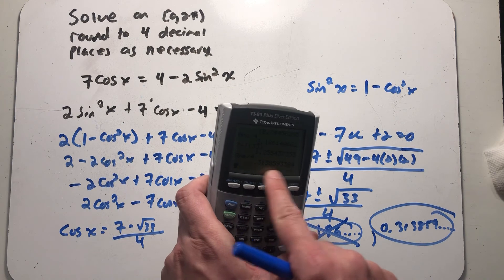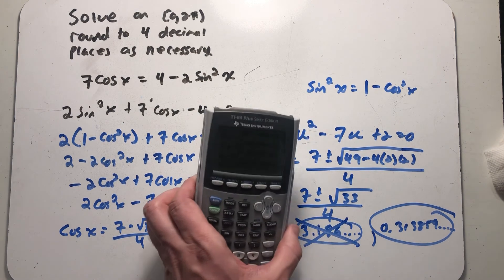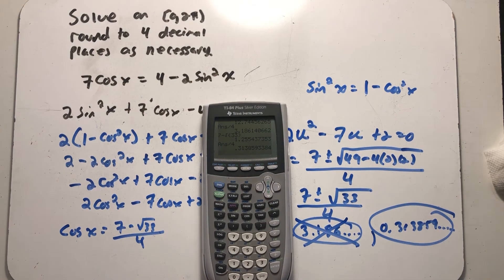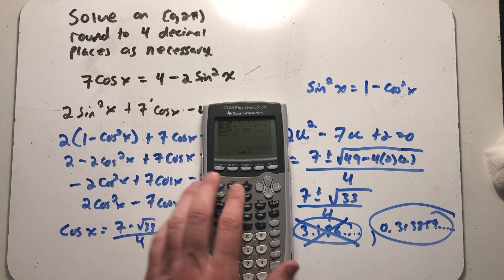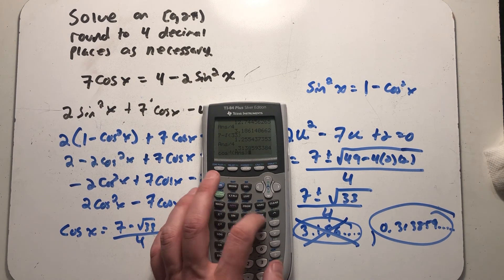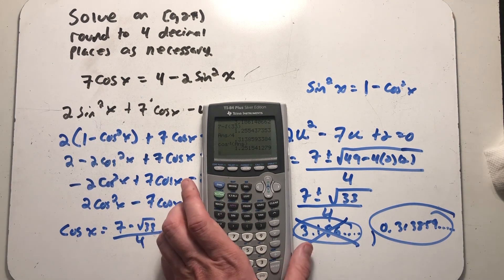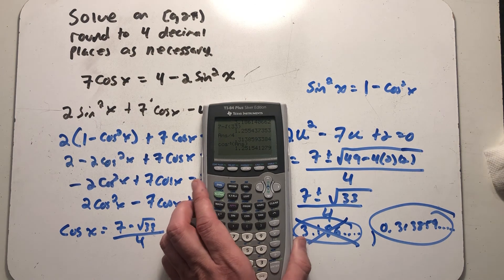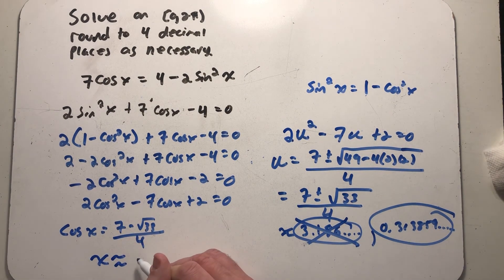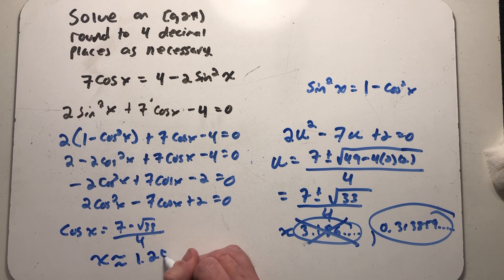Well, I have that value still exactly in my calculator or at least holding as many decimal places as my calculator can. So I'll make sure I'm in the radian mode. I'm gonna find inverse cosine of that number. I get about 1.2515 to four decimal places. x is about 1.2515.